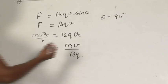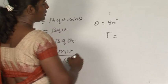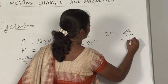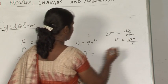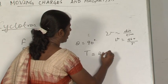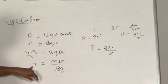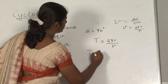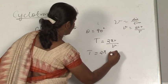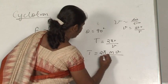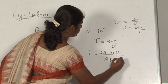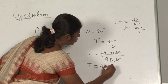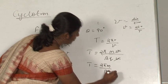What is the time period? Since velocity equals distance by time and distance is 2πR, we write T equals 2πR upon V. Substituting R equals MV upon BQ gives T equals 2π times MV upon BQ divided by V. The V cancels, giving T equals 2πM upon BQ.